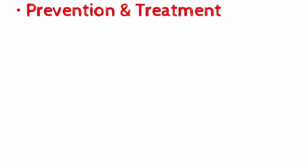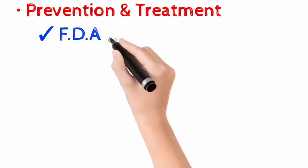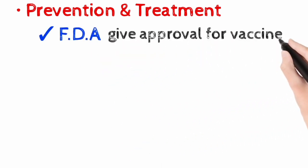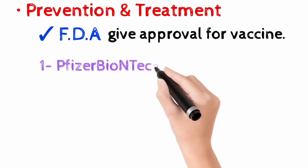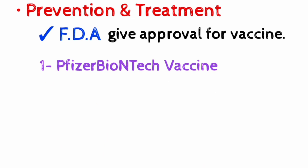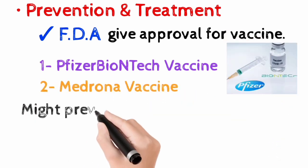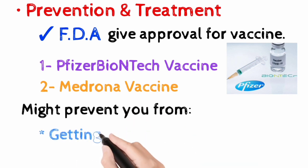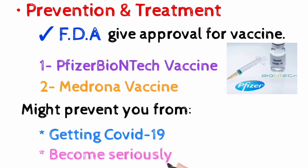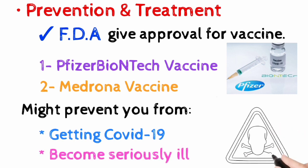If we talk about the prevention and treatment of COVID-19, the U.S. Food and Drug Administration, that is also known as FDA, has given emergency use authorization for two COVID-19 vaccines. These vaccines might prevent you from getting COVID-19 or prevent you from becoming seriously ill from COVID-19 if you get the COVID-19 virus.